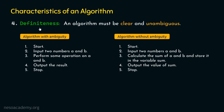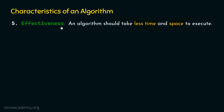Let's now understand characteristic number five, which is effectiveness. An algorithm should take less time and space to execute — it should run in less time and take less memory space. Throughout this course, we will learn how to design algorithms that take less time and less memory space. Time and memory space are very important resources, and we will see several tools that help us analyze how effective an algorithm is.